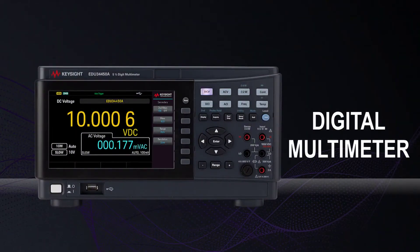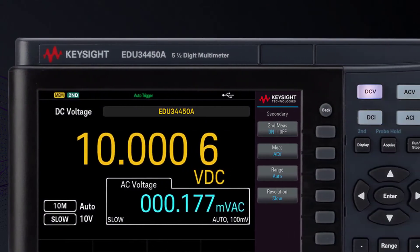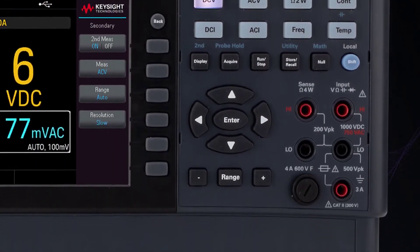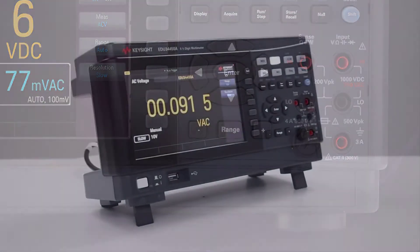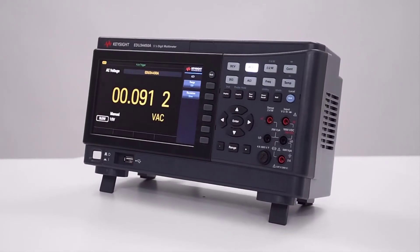The 5.5 digit dual display digital multimeter provides industry-grade measurement capabilities with an intuitive front panel. It measures 11 different input signals featuring 5.5 digits of resolution and a measuring rate up to 110 readings per second for speed-critical tests.